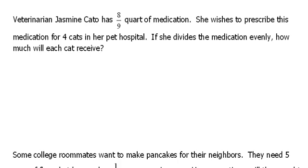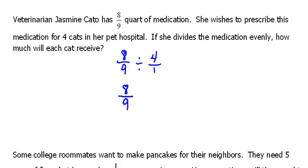We need to think about what's going on here before we start doing anything. She's got so much medication and she has to divide that amongst four cats. So isn't that eight-ninths divided amongst four cats? Now four doesn't look like a fraction, so we could put it over one. And now we don't divide fractions — instead, we need to flip and multiply. So we'll change this to multiplication and do the reciprocal of the second fraction.